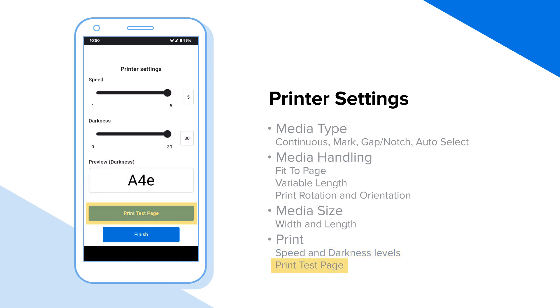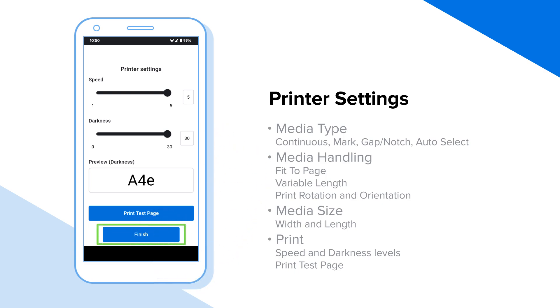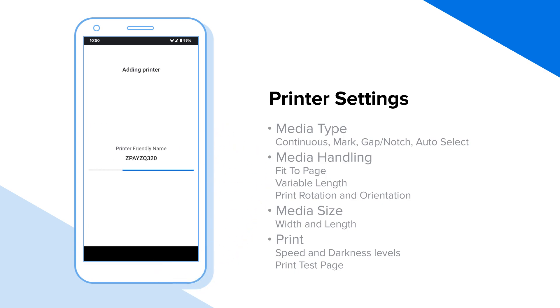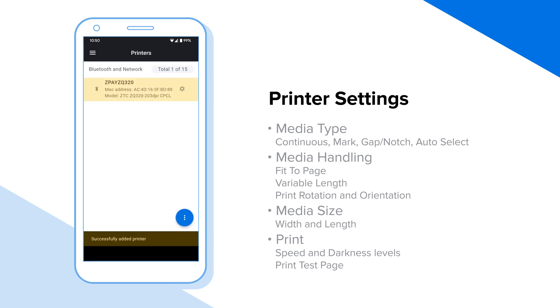With the print test page button, you can perform test prints to validate that the settings are correct. Tap Finish or Save after adjusting settings. After you edit your printer, you're ready to start printing.